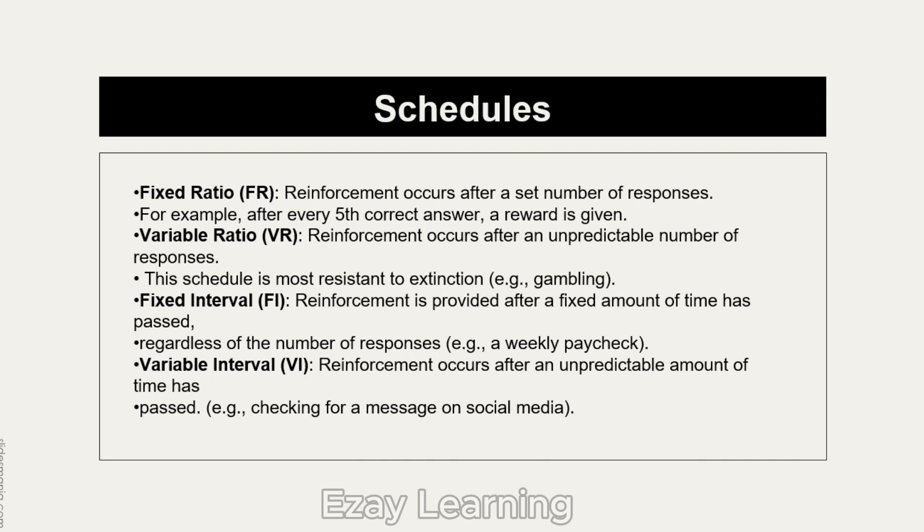Variable interval (VI) reinforcement occurs after an unpredictable amount of time has passed. Schedules of punishment are not clearly defined separately but follow the same pattern: FR punishment, VR punishment, FI punishment, and VI punishment. However, these are generally referred to as schedules of reinforcement.